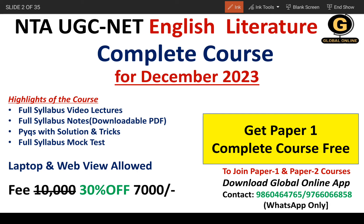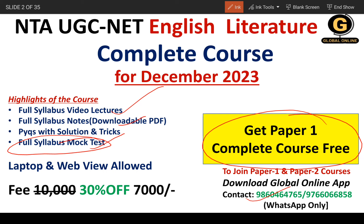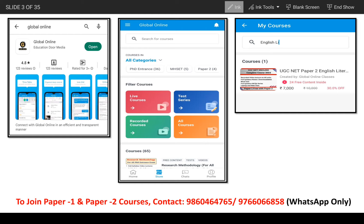I will tell you that we will have to do smart preparation for the December exam. That is why I have brought you to the Global Online English Literature complete course, in which you will get full syllabus video lectures with all concepts clearly explained. You will also get full syllabus notes in PDF format, available on your mobile or laptop. You will get mock tests as well. The best thing is you are going to get a complete Paper 1 course for free, saving 3,600 rupees. Free videos can be accessed on the Global Online app, which you can download.